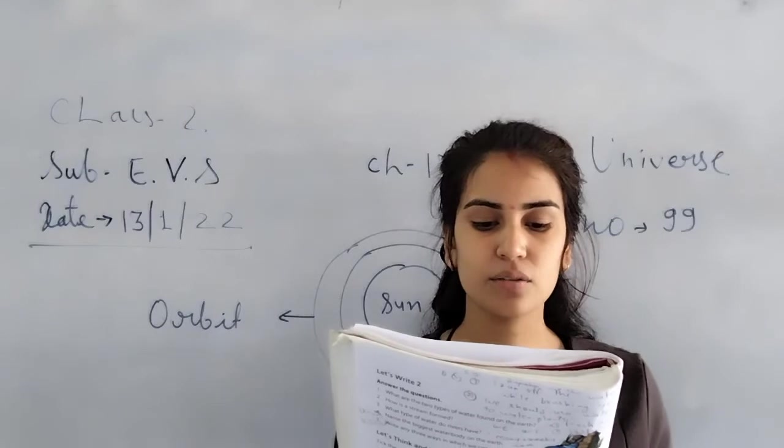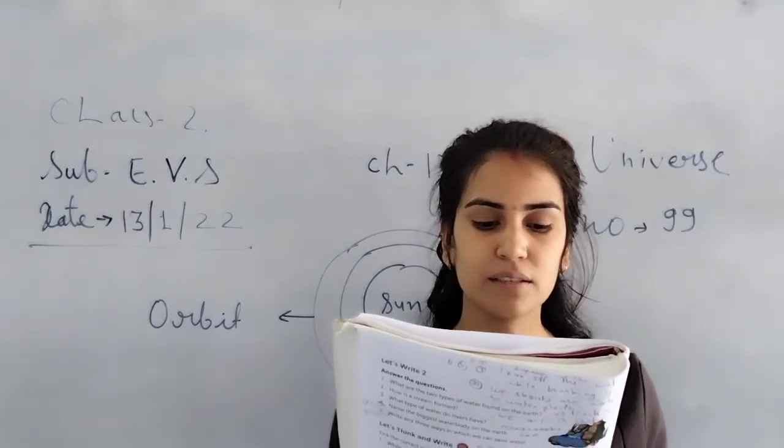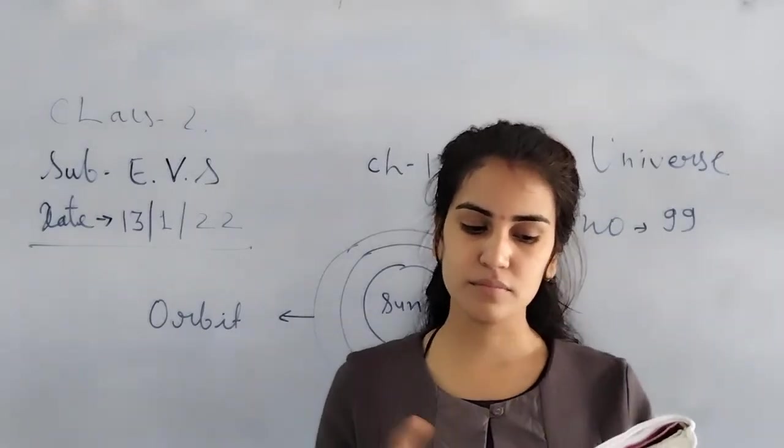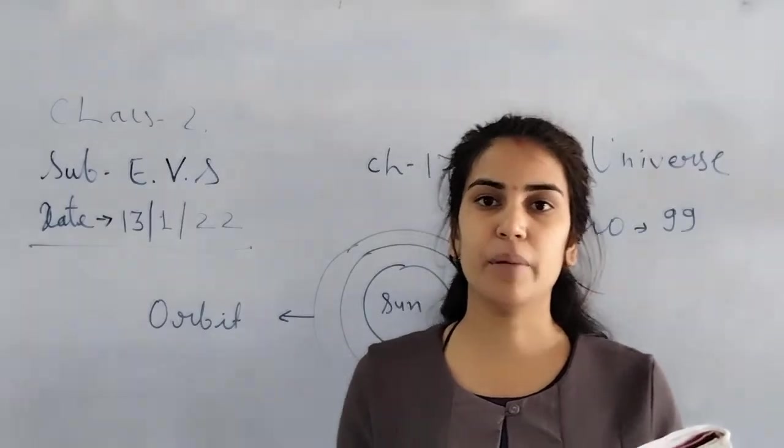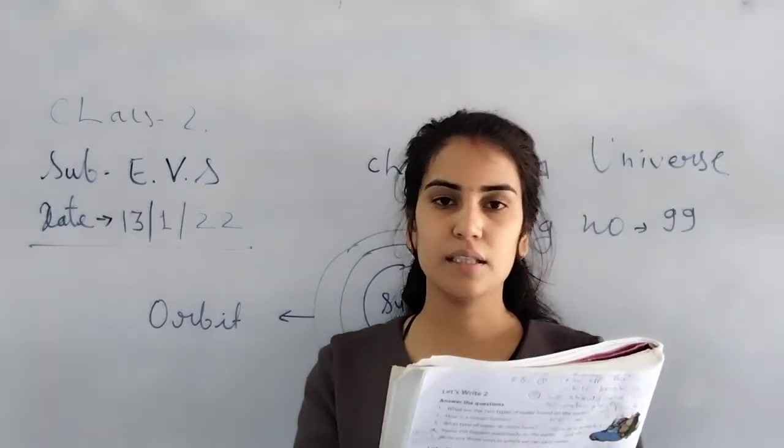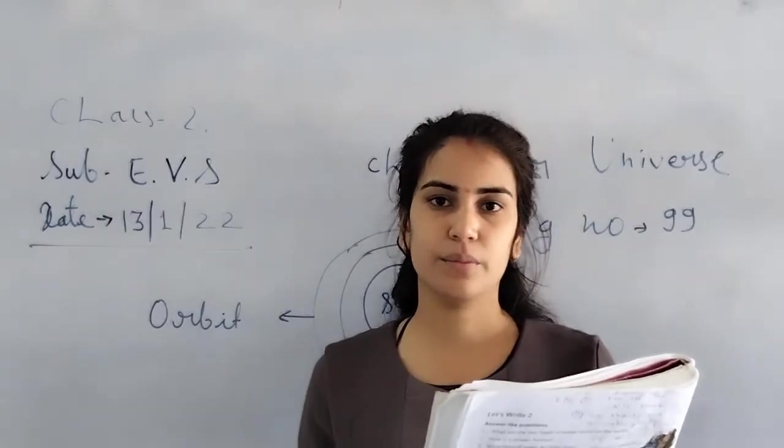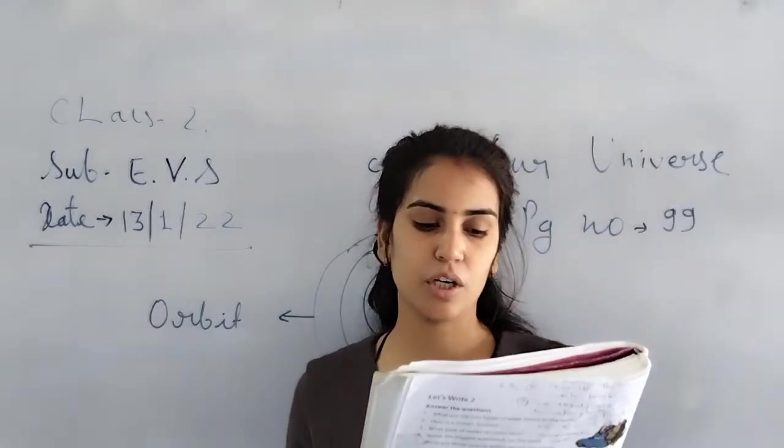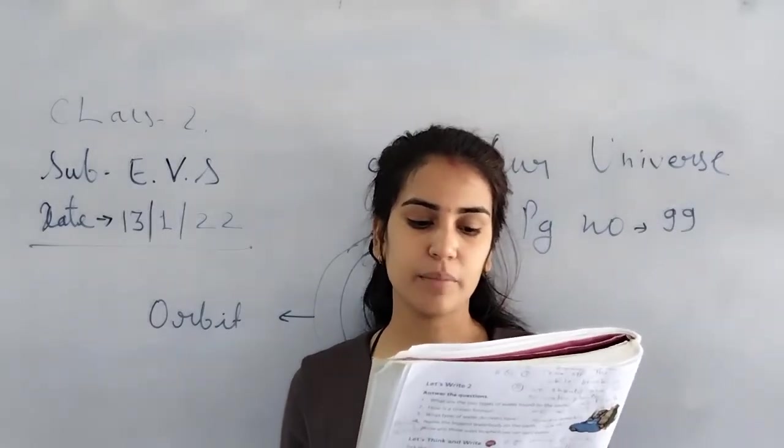Now, planets circle around the sun in a fixed path called the orbit. I have already told you that planet goes around the sun in a fixed path. We call this orbit. Orbit means a curved path taken by planet.